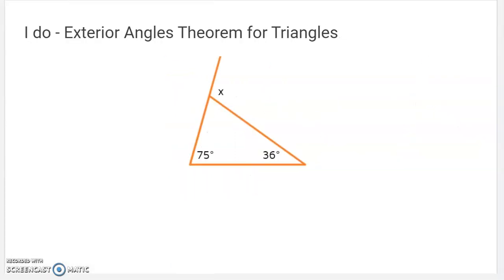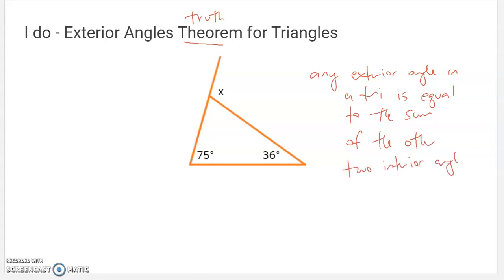Interesting. I hope you noticed that. And why that matters, that's actually always true for an exterior angle. It's called the exterior angle theorem. This means like a true thing. Truth for triangles is that any exterior angle in a triangle is equal to the sum of the other two interior angles.